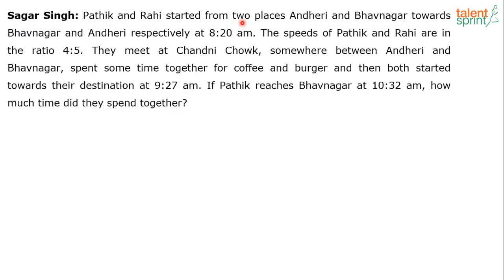Pathik and Rahi started from two places, Andheri and Bhavanagar, towards Bhavanagar and Andheri respectively at 8:20am. The speeds of Pathik and Rahi are in the ratio 4:5. They meet at Chandni Chowk, somewhere between Andheri and Bhavanagar, spend some time together for coffee and burger, and then both started towards their destination at 9:27am. If Pathik reaches Bhavanagar at 10:32am, how much time did they spend together?